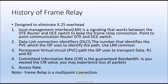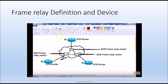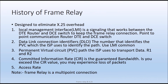When we talk about frame relay, five key issues come into play. First, we have the LMI, which is the local management interface, which helps us to set up a signal between DTE and DCE. The LMI sets up a signal connection between the DTE and the DCE. If that signal does not exist, then we cannot have any connection.